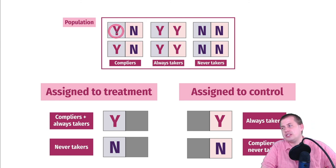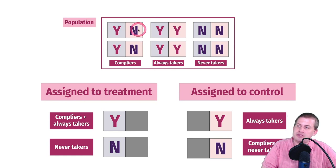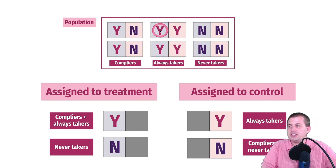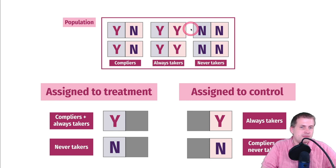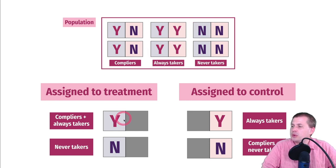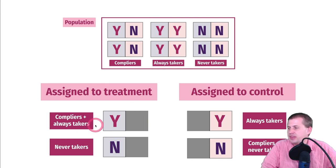If we could read minds, we'd know this person is a complier because they'd do it in treatment and not in control; these are always takers; these are never takers. But when we actually collect the data, we only see what assignment people got and whether they did it.